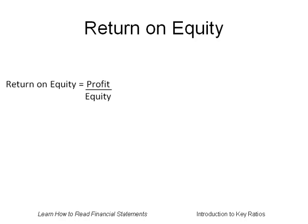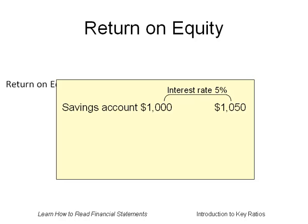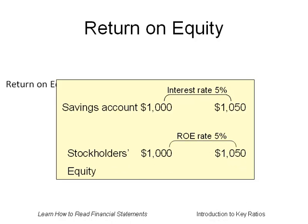The best single diagnostic tool is return on equity, which is computed as follows: profit, or net income, divided by stockholders' equity. Return on equity measures the return the company is earning on the resources the stockholders provided. An excellent return is 20%. Consider a bank savings account — you expect it to earn a return, say 5%. If you deposit $1,000, in one year you expect it to grow by $50, which is 1,000 times 5%. So it is with a corporation: the stockholders invest money and expect the corporation to earn a profit on that money. Return on equity measures that return.